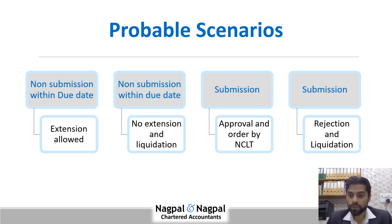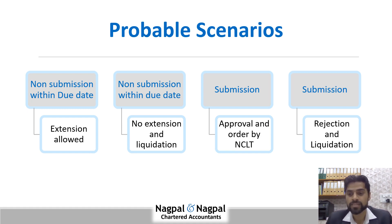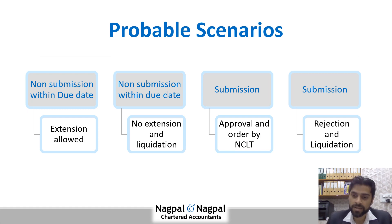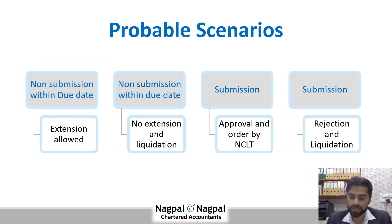Let us see the probable scenarios. In case of non-submission within the due date of the CIRP process, the IP can approach NCLT and seek an extension of 90 days. If there is non-submission within the due date and no extension is allowed, then the company will definitely go into liquidation and NCLT has to pass the liquidation order. If a plan is submitted and approved by NCLT, the insolvency process gets resolved. If a plan is submitted and rejected by NCLT as it is not meeting the criteria or is not as per the law, then NCLT will pass a liquidation order. The CIRP process due date is 180 days plus a 90-day extension.